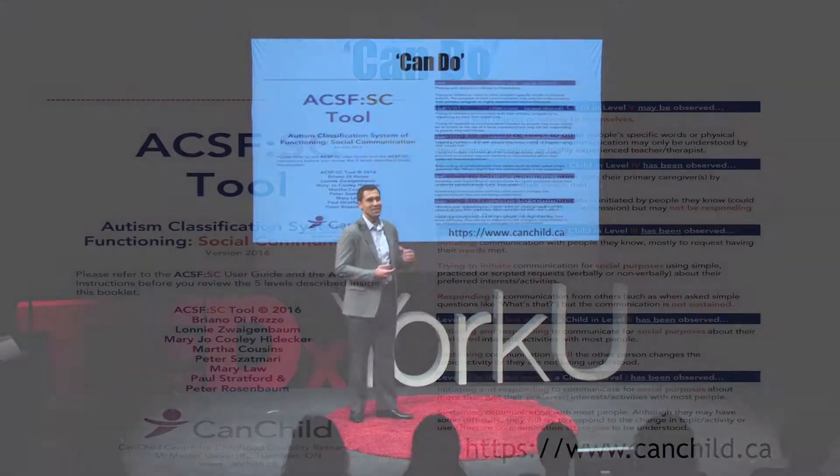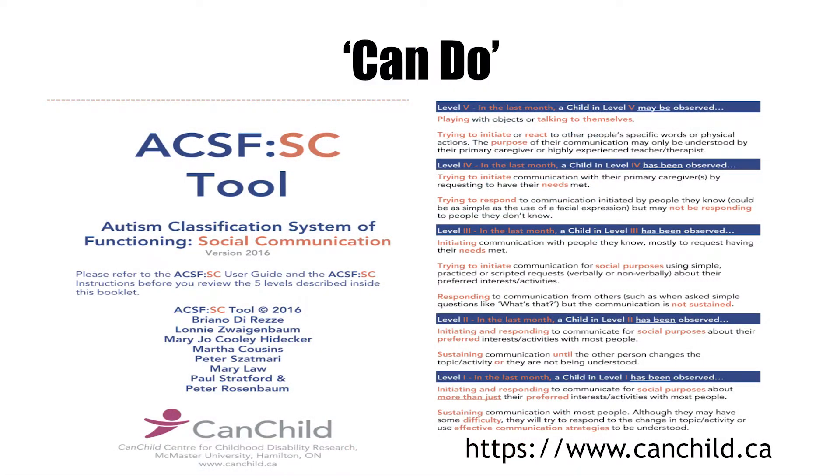A colleague of mine at McMaster, Dr. Peter Rosenbaum, has pioneered functional classification systems in cerebral palsy — one in particular focused on gross motor function. It categorizes levels of ability based on what people can do. What we did — and you can go to the website for details — is we developed a functional classification system in autism starting in 2011 when we were funded.